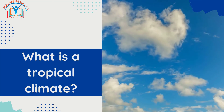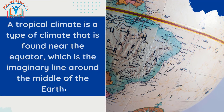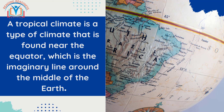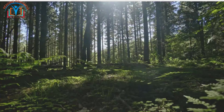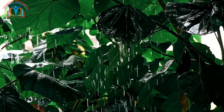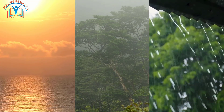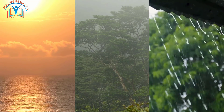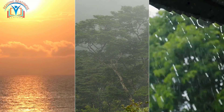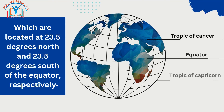What is a tropical climate? A tropical climate is a type of climate found near the equator, which is the imaginary line around the middle of the earth. It is a hot and humid climate with lots of rain, characterized by warm temperatures, high humidity, and abundant rainfall.